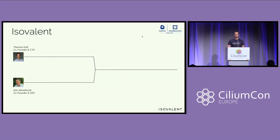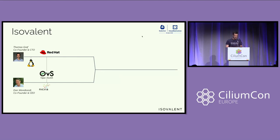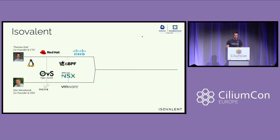This brings us to Isovalent. How did Isovalent get started, and how is it related to Cilium? Co-founders are myself and Dan. My background is in Linux kernel development — I was at Red Hat for 10 years working on the Linux kernel. Dan was at a startup called Nicira working on OpenVSwitch, and I was working on OpenVSwitch as well — that's how Dan and I met. Then eBPF started to appear in 2014. I joined Cisco for a couple of years, and then we started Cilium, and ultimately founded Isovalent, together with Andreessen Horowitz who funded our first round.